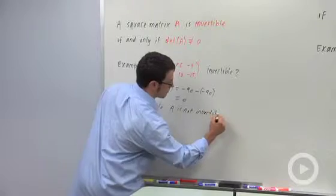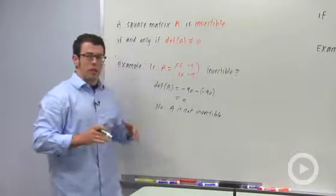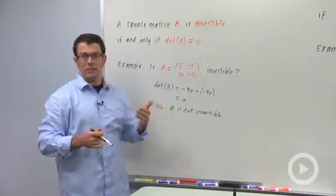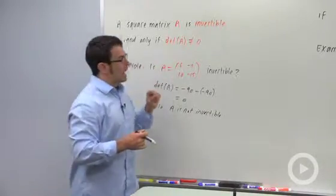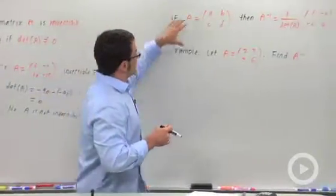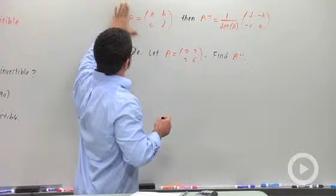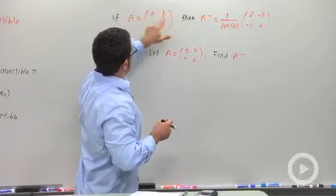Now another thing, another relationship between determinants and inverses is for 2 by 2 matrices, I can get the inverse really easily using this formula. If a matrix has these entries A, B, C, and D,